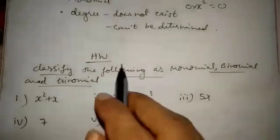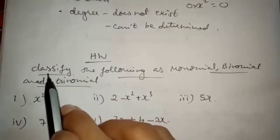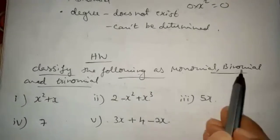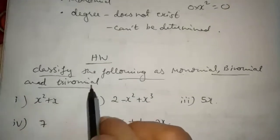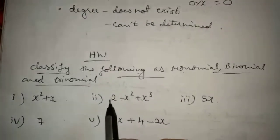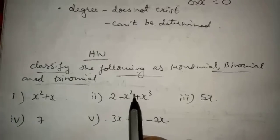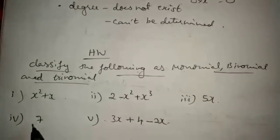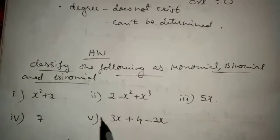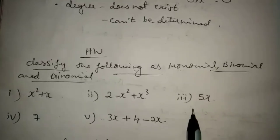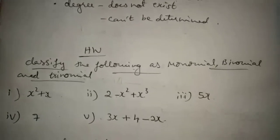Students, take down some homework questions. Classify the following as monomial, binomial, and trinomial. First: x square plus x. Second: 2 minus x square plus x cube. Third: 5x. Fourth: 7. Fifth: 3x plus 4 minus 2x. Solve these questions in your homework book.